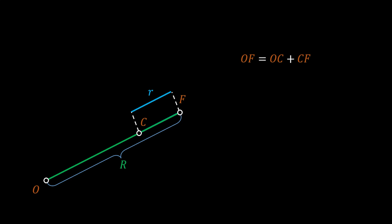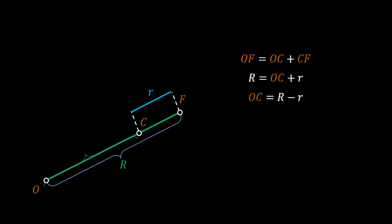Since line CF has the value of small r and line OF has the value of capital R, we can substitute those values and conclude that the length of line OC is equal to the difference between the radius of our quarter circle and our inscribed circle, that is R minus r.